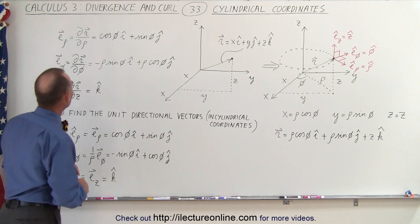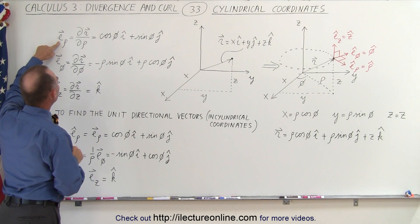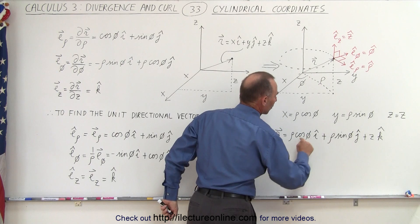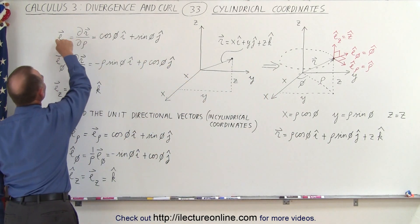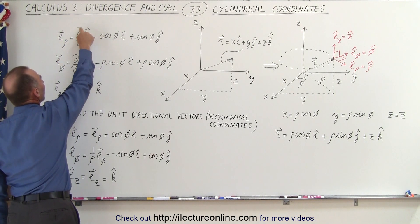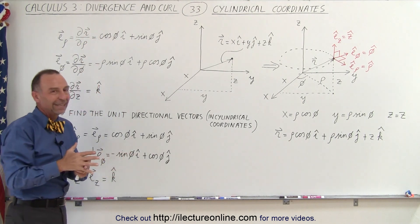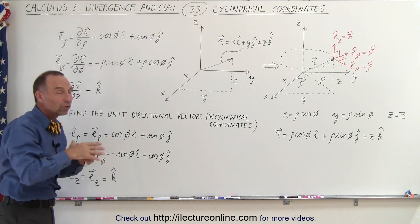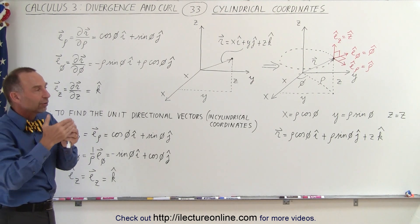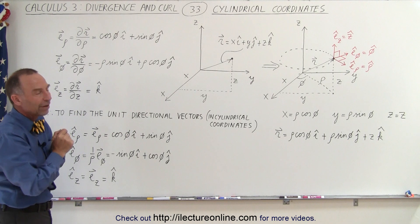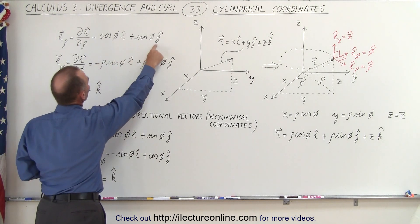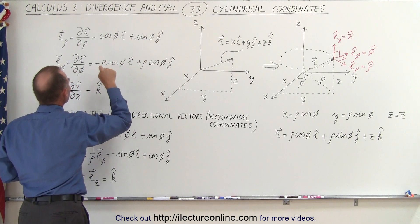Now to find the unit vectors, we can define a vector in the direction of rho as the change of the position vector with respect to rho. Taking the partial derivative of the position vector with respect to rho gives us the vector pointing in the rho direction. Then taking the partial derivative with respect to phi gives the direction of the position vector with respect to phi — not the unit vector, simply the component in the phi direction. And taking the partial derivative with respect to z gives k. So these are the components of the position vector in the directions of rho, phi, and z.